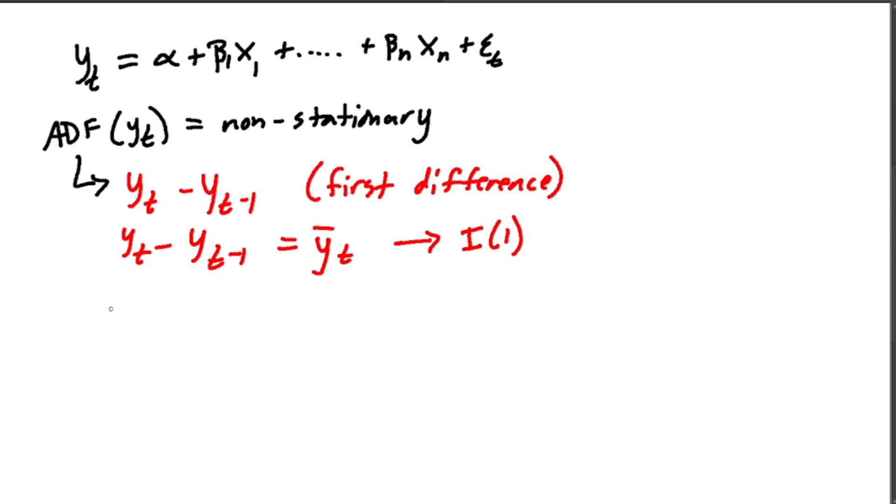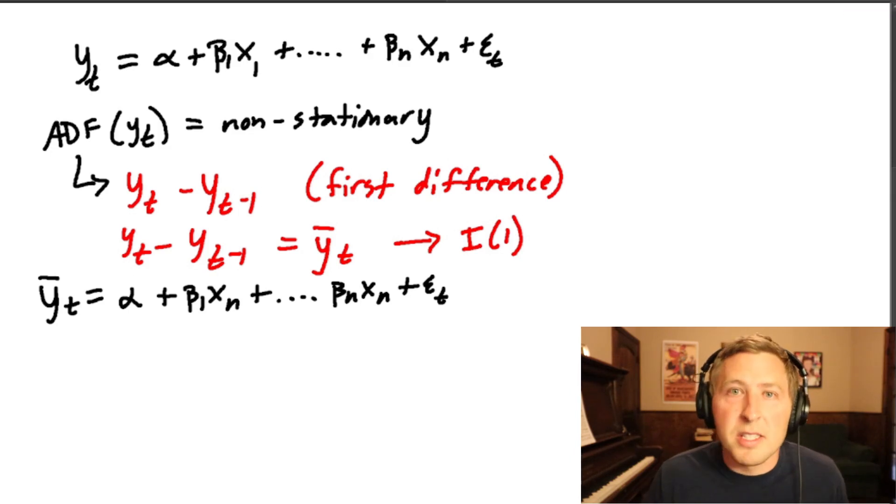And typically what I see in practice, which is incorrect, is going to be y bar of t, which is our difference variable is equal to alpha plus beta one x one plus all the other betas to beta n x n plus epsilon of t. And now the argument is, well, now I have this y bar t. And now I've lost information because I don't have the levels in here.